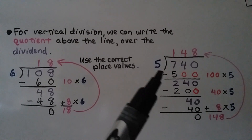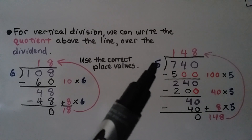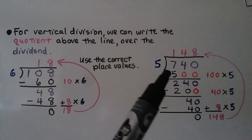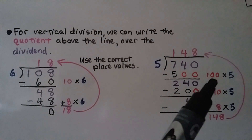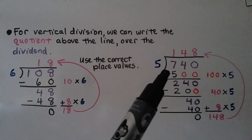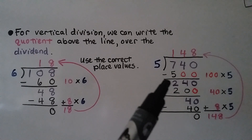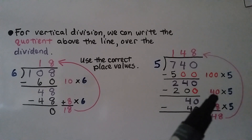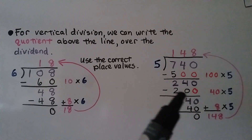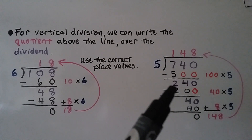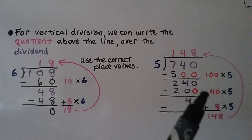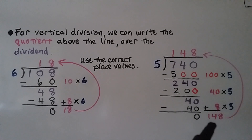Now we have a much bigger problem: 740 divided by 5. That would take a lot of subtraction with small multiples of 5, so we think, 100 times 5 is 500. We subtract that and get a difference of 240. Then, 5 times 4 is 20, and if we add a 0 to make it 40, we can add a 0 to the 20 to make it 200. We subtract that, leaving 40. And 8 times 5 is 40, so we subtract 40 and we're down to 0.